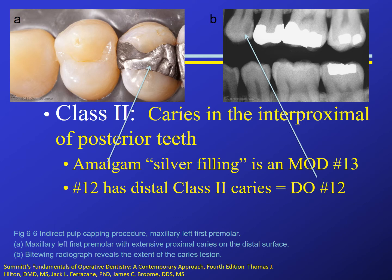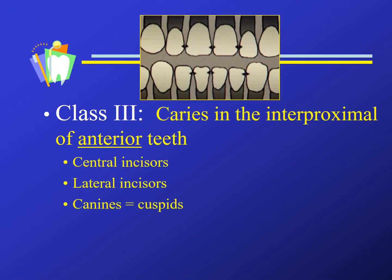Here we see a class two amalgam that encompasses the mesial, occlusal, and the distal of the premolar. Pictures A and B are of the same arch. We see amalgam on the second premolar — this radiopaque or very white area is the amalgam seen in picture A. But on the first premolar in picture A, it looks like a sound tooth. However, with the bite wing radiograph in picture B, there is a large class two caries lesion on the distal.